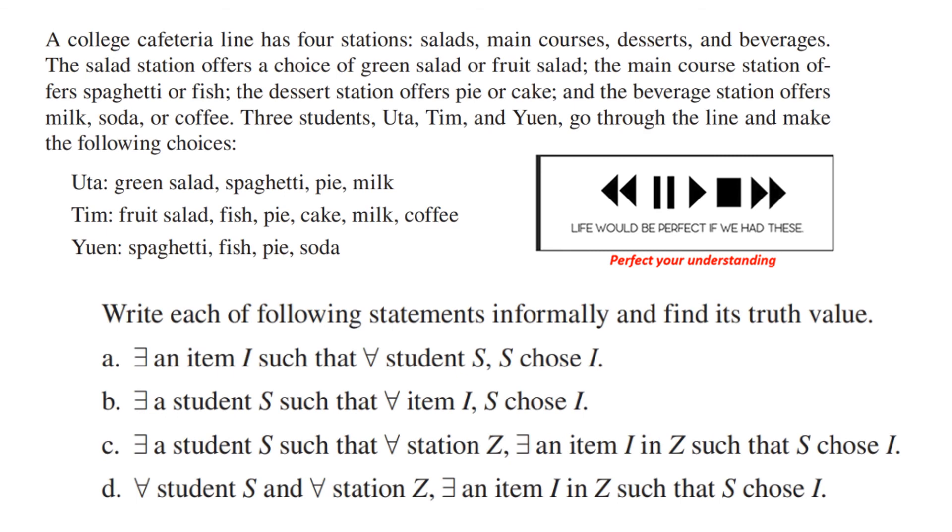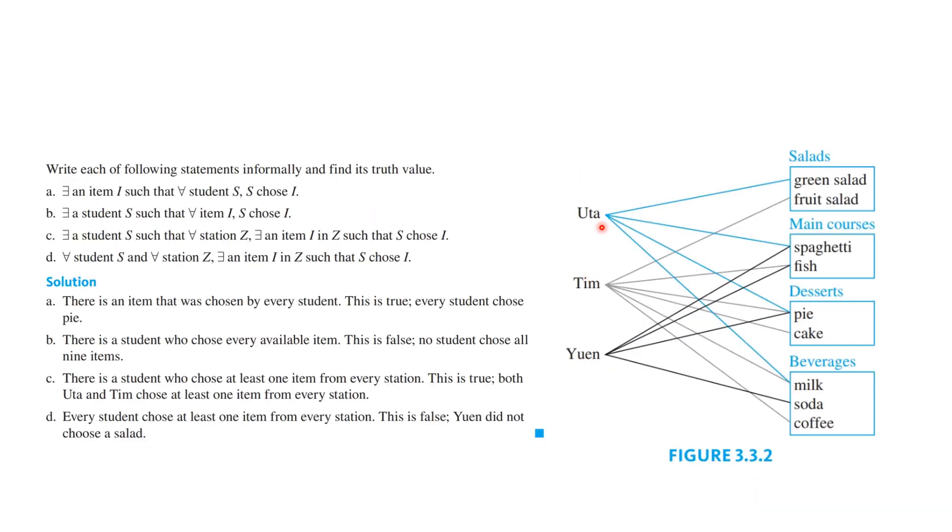Let's see how you did. Sometimes a picture can be good, and here we draw a picture showing what the people took from the various stations, and these were what you're supposed to decode. So, the solution to part A is, there is an item that was chosen by every student. That's the statement in informal words. This is true because every student chose pie.